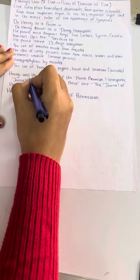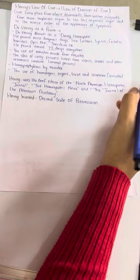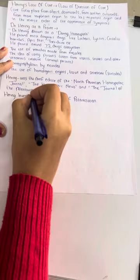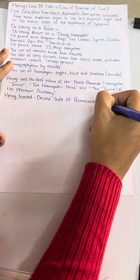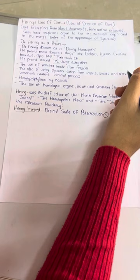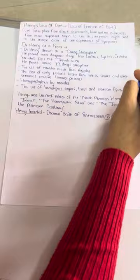Apart from the positions held by Dr. Herring, Dr. Herring was the chief editor of North American Homeopathic Journal and the Homeopathic News and the Journal of Allentown Academy. And also, the most important invention is a question. Dr. Herring invented decimal scale of potentization. Apart from writing books, practicing homeopathy as a prover, Dr. Herring invented the decimal scale of potentization.